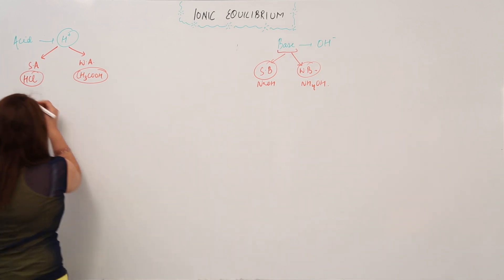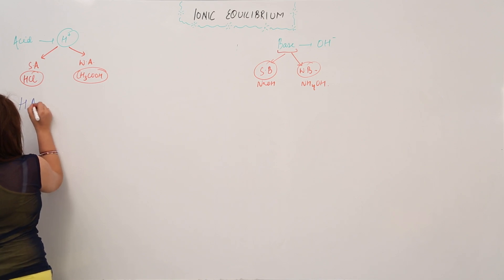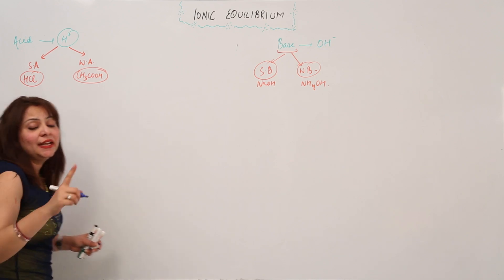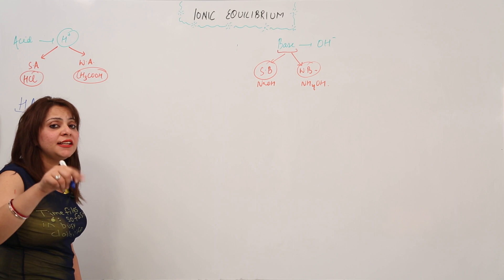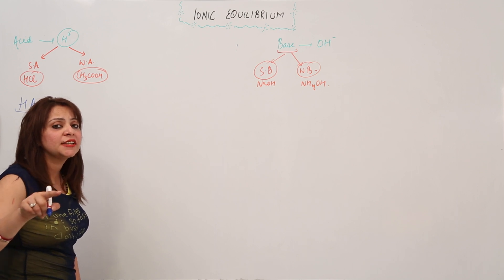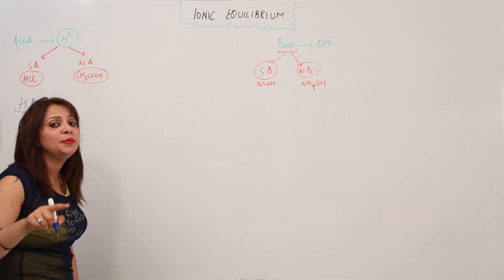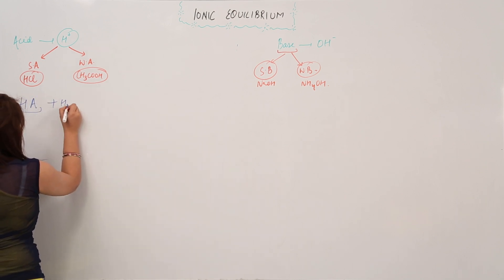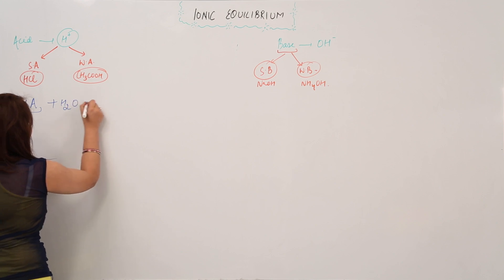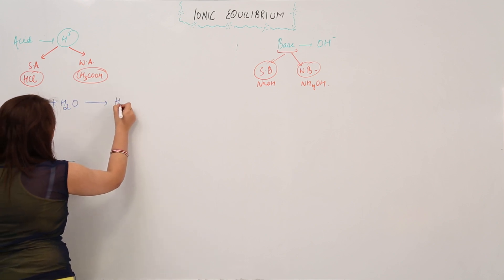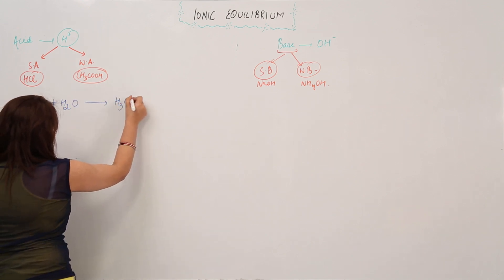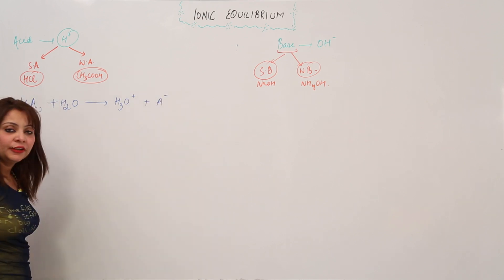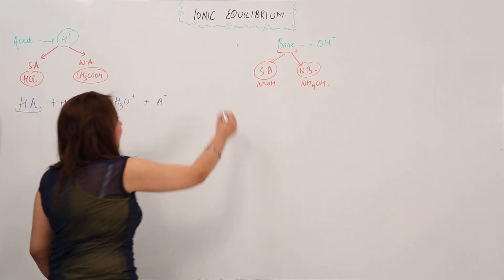The general reaction is: HA indicates an acid — if you see H present in a substance, that means it is an acid. So, dissolving it in water, it will form the hydronium ion H₃O⁺ and A⁻.